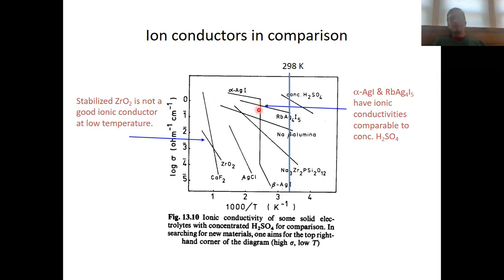Similarly, rubidium silver iodide can achieve at room temperature a silver ion conductivity which is only about one order of magnitude smaller than that of concentrated sulfuric acid.